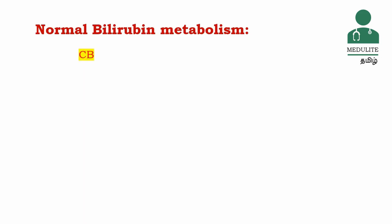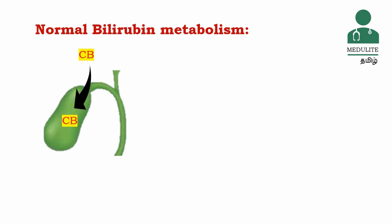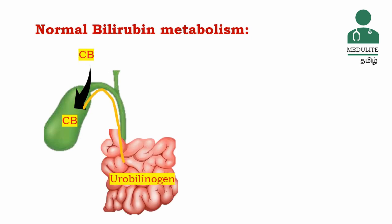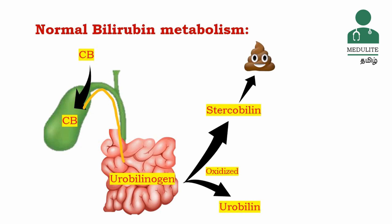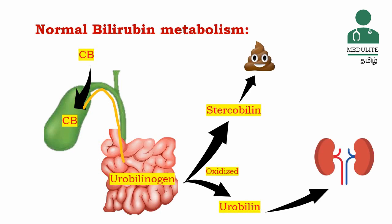The conjugated bilirubin will be stored in the gallbladder. We eat food and digest it. The conjugated bilirubin will then be converted into urobilinogen. There are microbes and enzymes in the gut. Through the blood system and kidneys, it will be excreted in the feces. This is why our urine is yellow color and our stool has a brownish color.